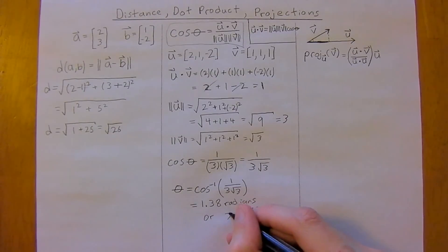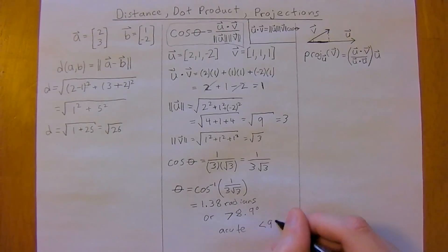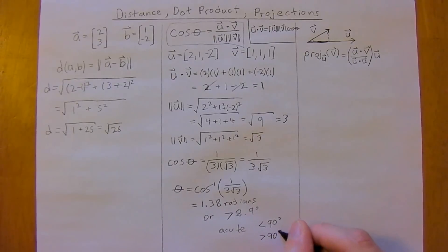and you see that this angle is actually acute. It's an acute angle because it's less than 90 degrees, and remember, more than 90 degrees would be obtuse, but more than 90 degrees, but less than 180 degrees would be obtuse.